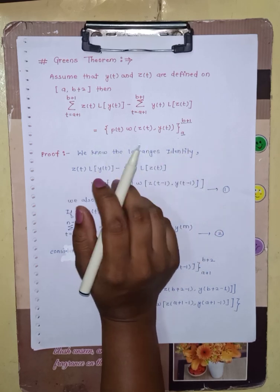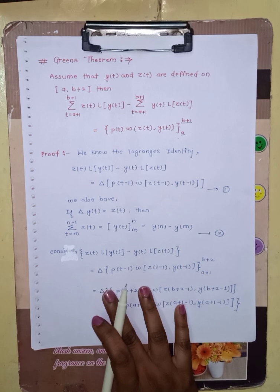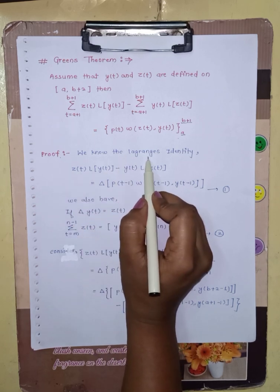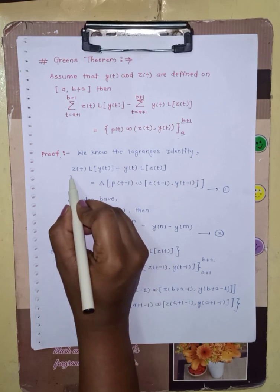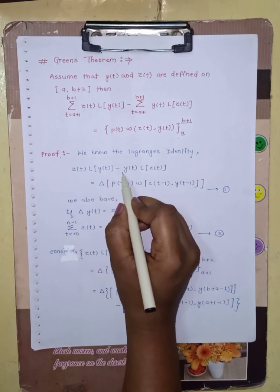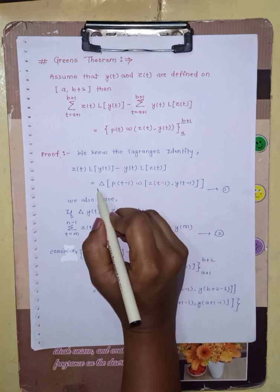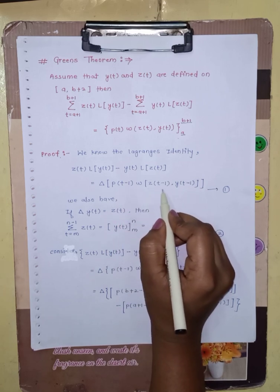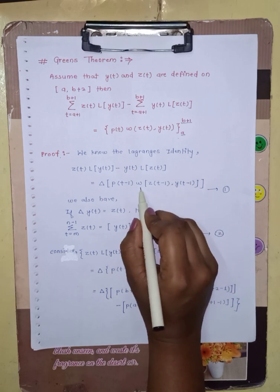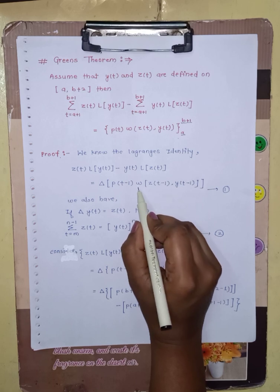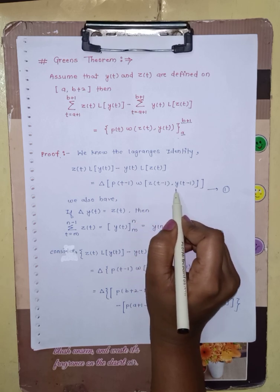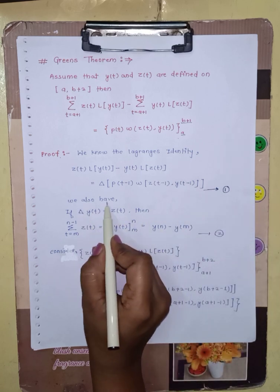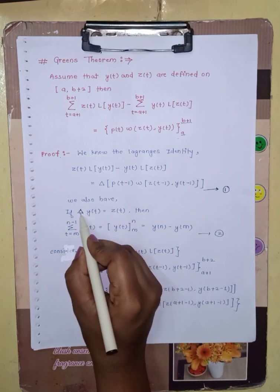We have to prove this, and to do so we use Lagrange's identity. Starting with the proof, we know Lagrange's identity states: z(t)·L[y(t)] minus y(t)·L[z(t)] equals Δ of p(t−1)·ω(z(t−1), y(t−1)), where ω is the Casoratian of z(t−1) and y(t−1). We will label this equation 1.